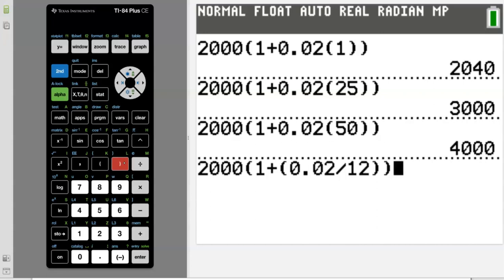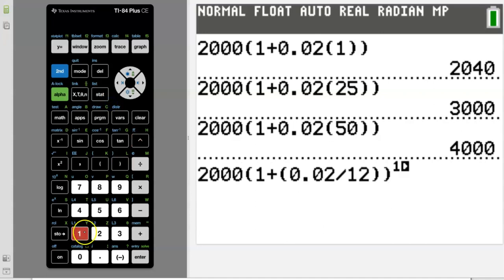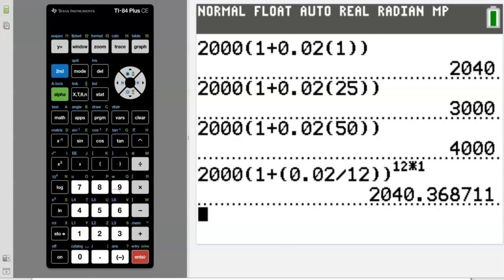Close the parentheses for your fraction. Close the parentheses for the growth factor. And now we're going to raise it to 12 times T. My first one is just one year. So one year, there's my result.